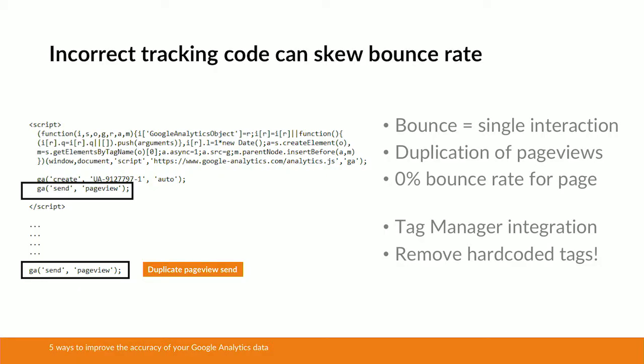Beware as well if you're migrating over to Google Tag Manager. When you migrate, ensure you remove all instances of the hard-coded Google Analytics tags on your site. If you don't, then the similar sort of thing is going to happen — duplication of page views and artificial lowering of bounce rate. So be really, really careful when you're implementing tracking code on your site. It needs to be clean and right for your bounce rate to be accurate.